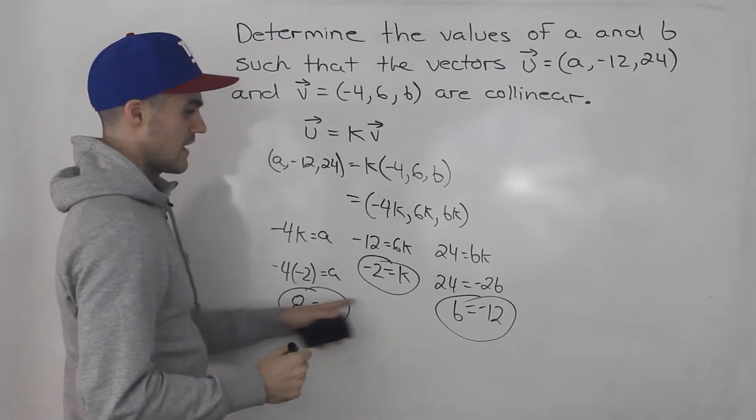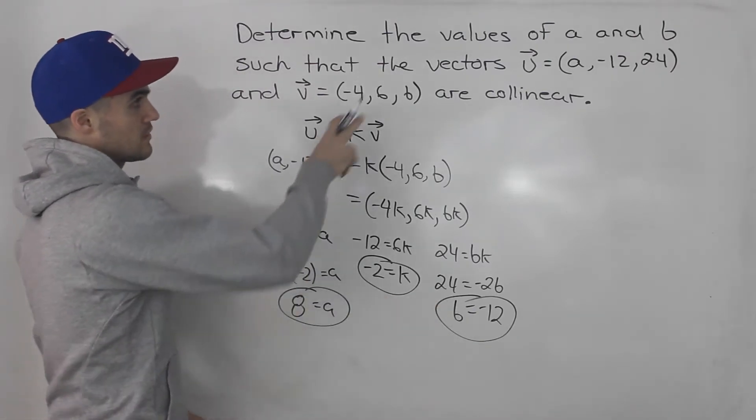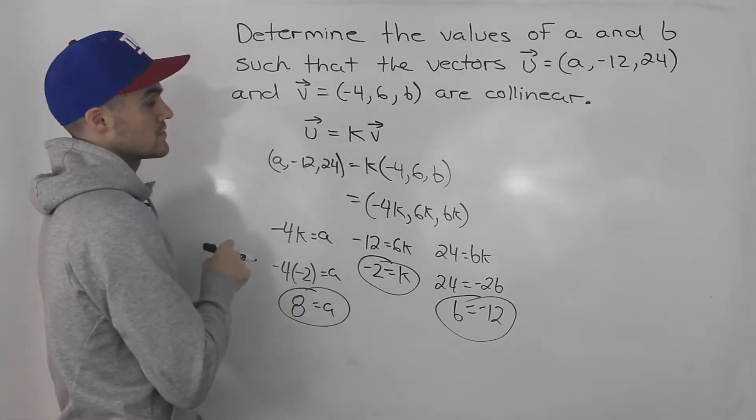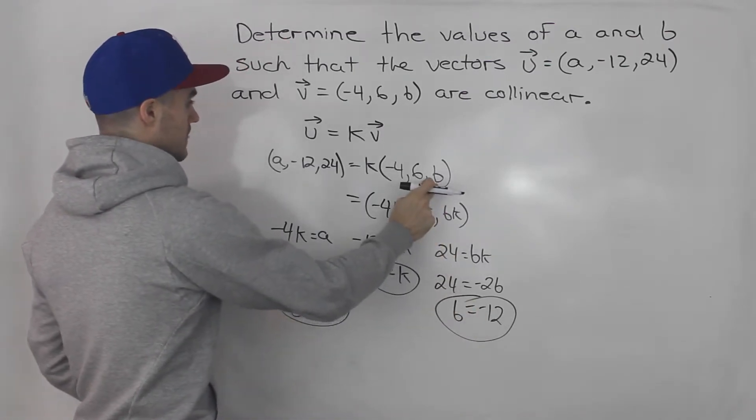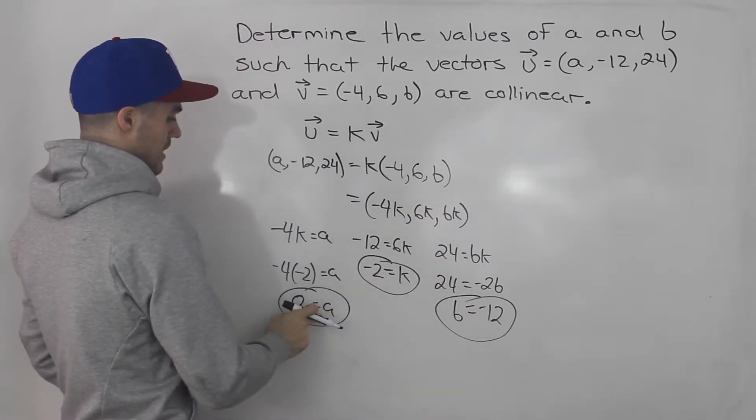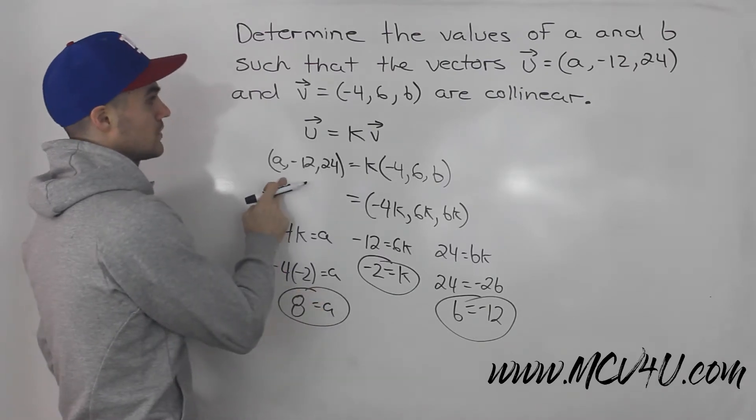So those are the values of A and B that would make these two vectors collinear. So the B value -12 will go here, and then the A value of 8 would go here.